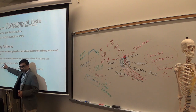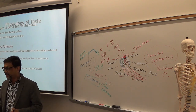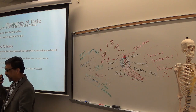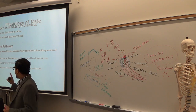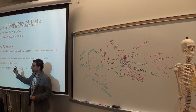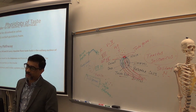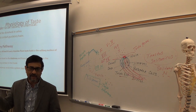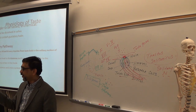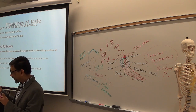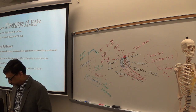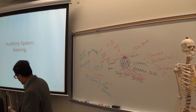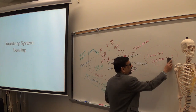The gustatory cortex gives you the perception of taste — whether it is butter, cheese, meat, or milk. Additionally, the hypothalamus and limbic system also receive the gustatory signal, because food is connected to emotion and memory. If you taste food you love, it connects you to your memories. Olfactory and gustatory are two special senses.